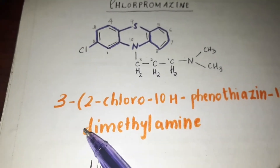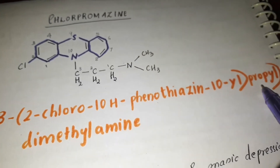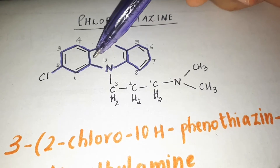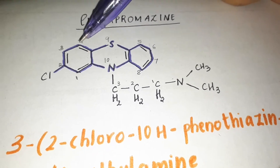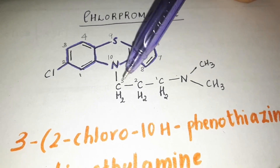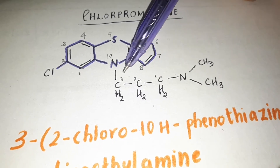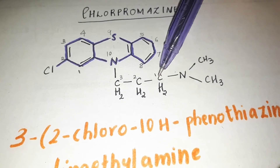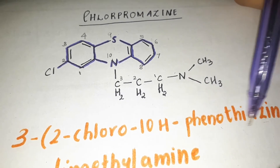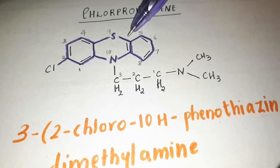The IUPAC name is 3-(2-chloro-10H-phenothiazin-10-yl)-propyl dimethylamine. The structure includes chlorine, a propyl chain (CH2-CH2-CH2), and a dimethylamine group (CH3, CH3). This whole ring system is the phenothiazine ring, so chlorpromazine is considered a phenothiazine derivative class of antipsychotic drug.